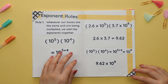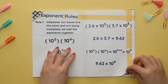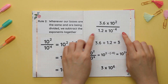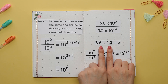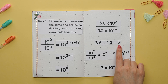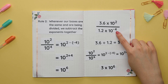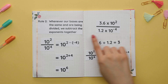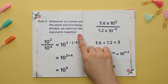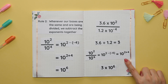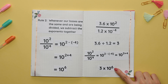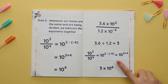When dividing two numbers in scientific notation we first divide the coefficients together. So we divide 3.6 by 1.2 to get 3. Next we move on to the bases. Our second exponent rule applies here since we have the same base of 10 being divided, so we subtract the exponents to get our new answer. Putting this together we get 3 times 10 to the 6th power.